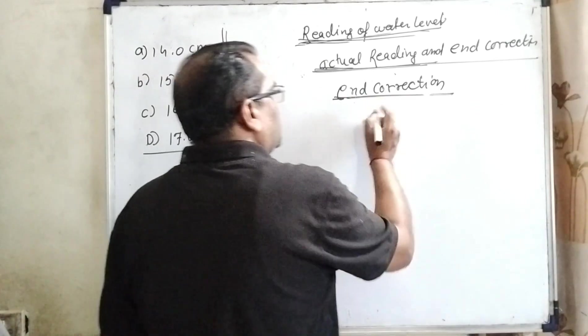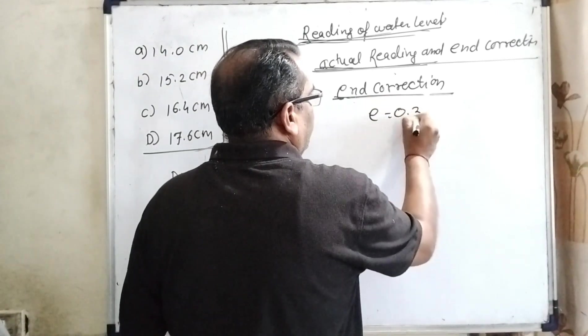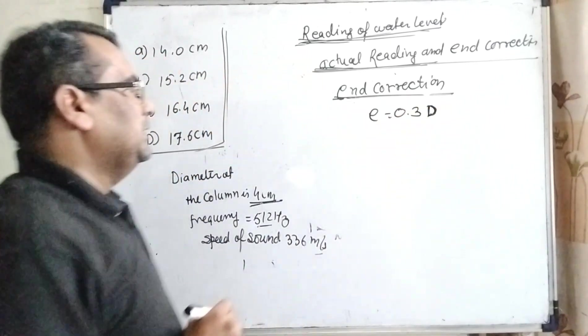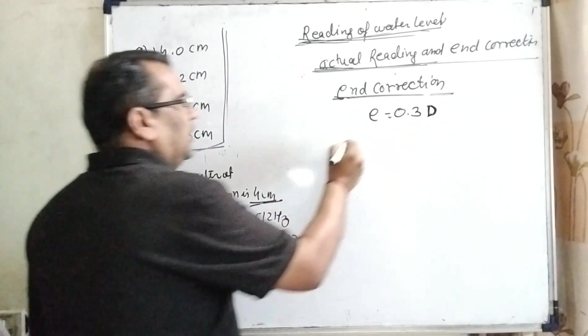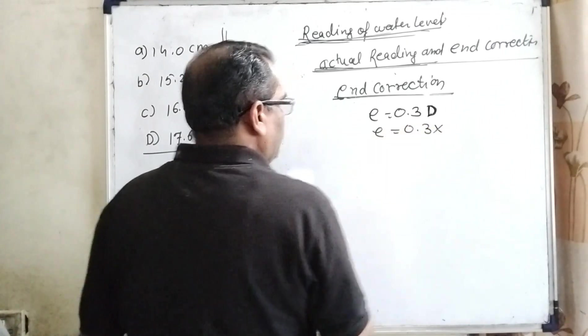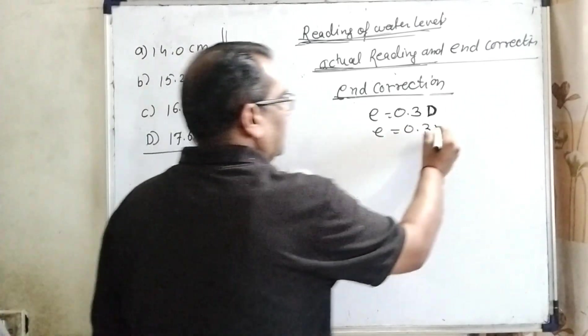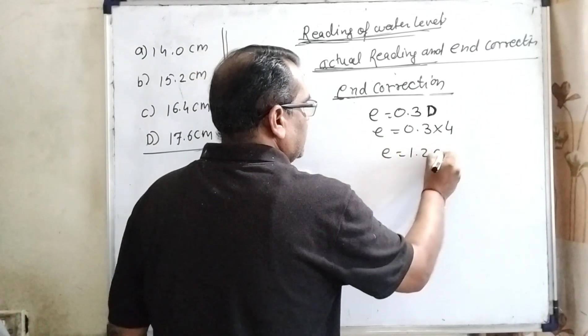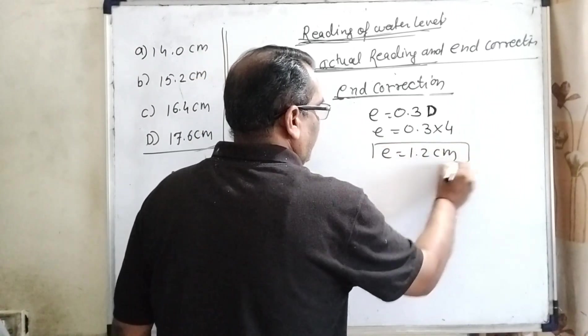Here is the formula for end correction: E equals 0.3 multiplied by the diameter of the column. Here, the diameter of the column is 4 cm as given. Then multiply by 4, we get 1.2 cm. This is the value of end correction.